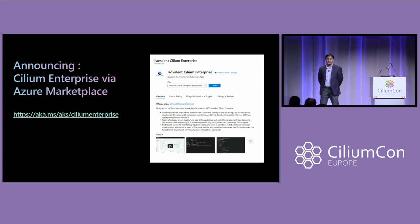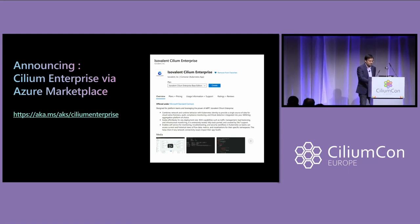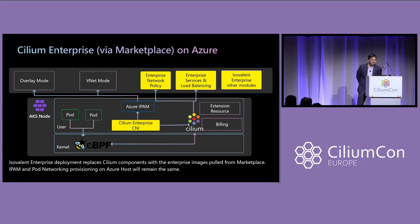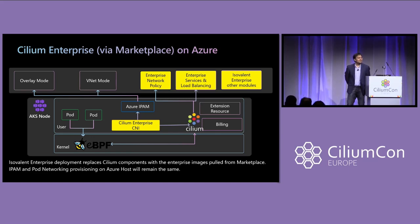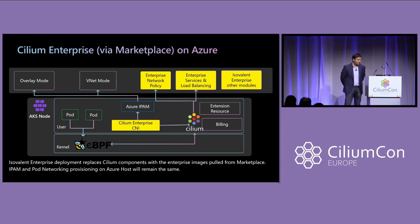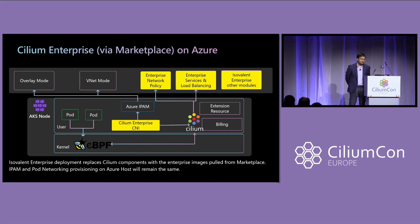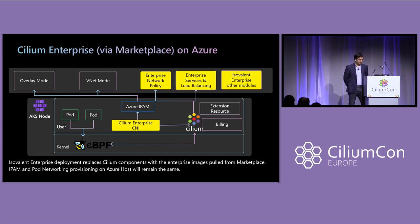The first thing we're announcing today is Cilium Enterprise via Azure Marketplace. Cilium Enterprise via Azure Marketplace is natively integrated with Azure. What that means is that it uses Azure IPAM, it uses Azure host networking, and Cilium Enterprise can be deployed with a simple click of a button. It will automatically upgrade you from open source Cilium to Cilium Enterprise, providing enterprise network policy, enterprise services, load balancing, and several other enterprise modules.